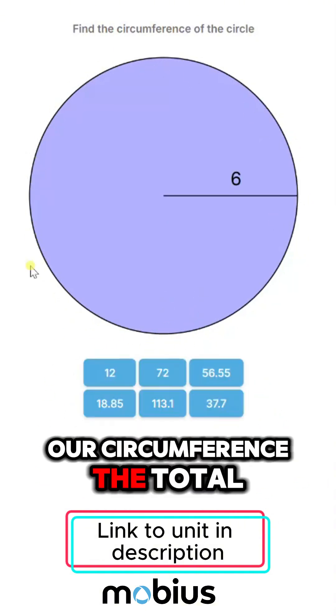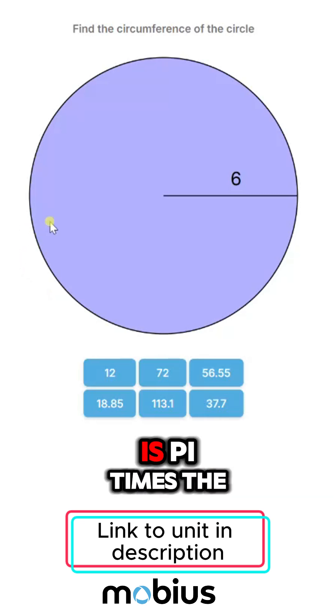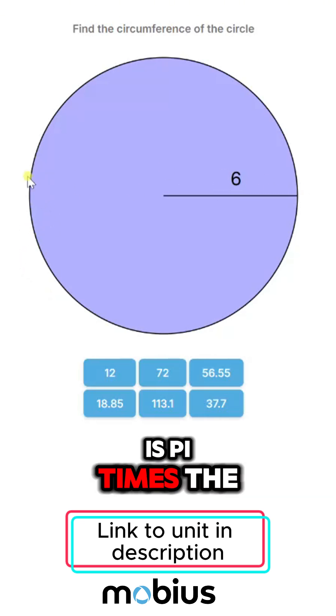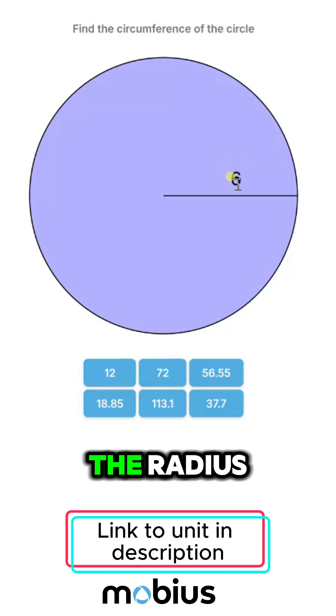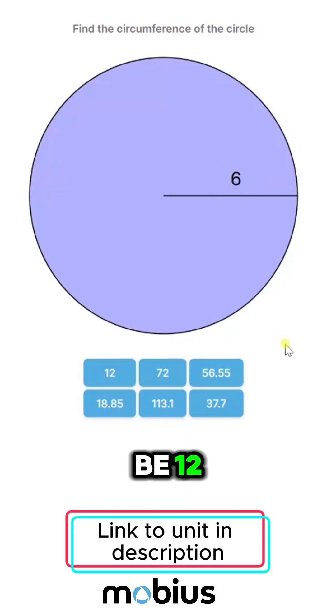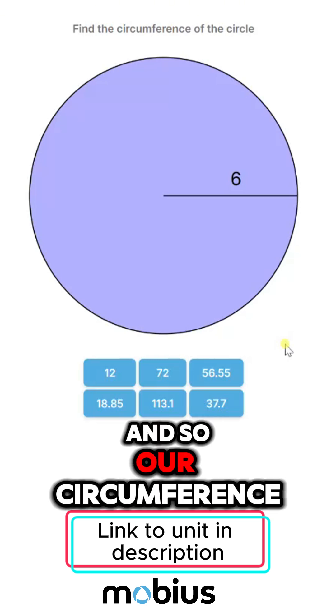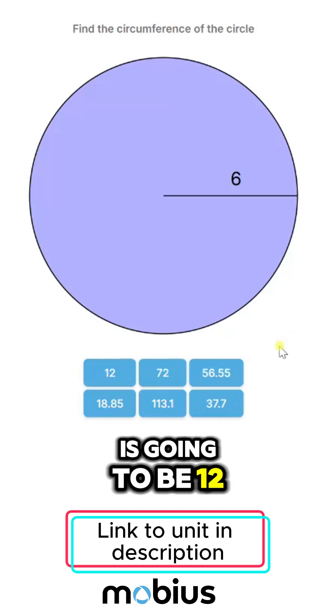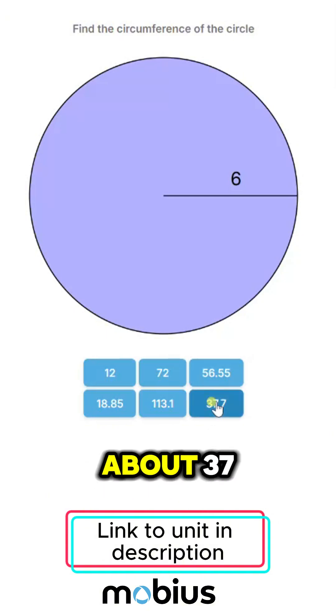Our circumference, the total distance around the outside, is pi times the diameter, or pi times twice the radius. So if our radius is 6, the diameter would be 12, and our circumference is going to be 12 times pi. Pi is just a bit more than 3, so that's going to be about 37.